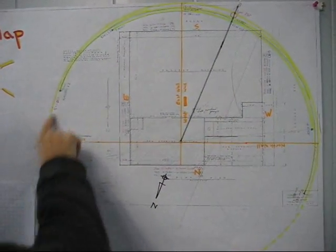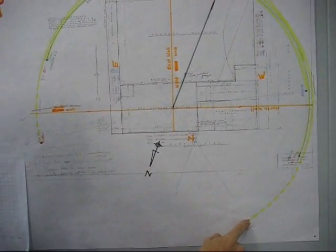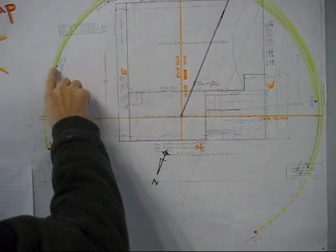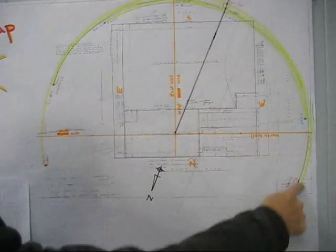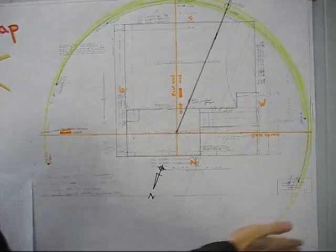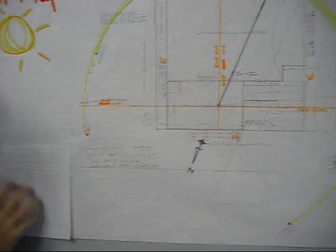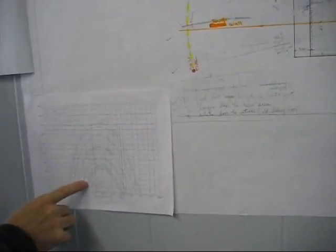Here is the sun. Here's where it rises in June, comes all the way around and sets over here. It rises here in March and September and sets here. In December, it rises here and sets here. The arc in the summer is much higher, and in winter it's lower, as shown on this chart.